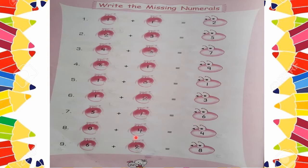Next: 0 plus space is equal to 4. Start counting from 0: 1, 2, 3, 4 — that's 4 numbers. Then we get 4. So 0 plus 4 is equal to 4.